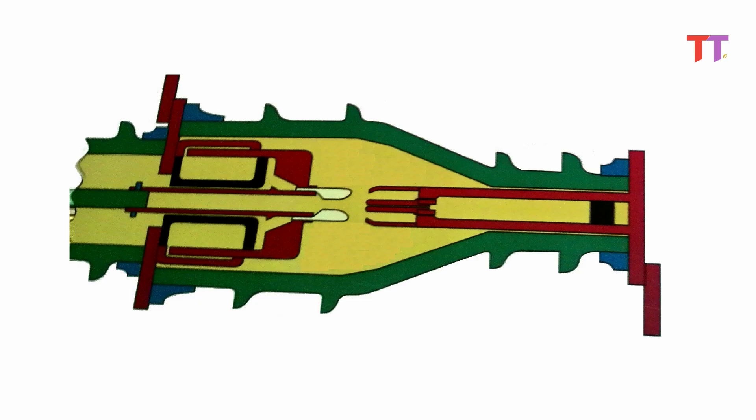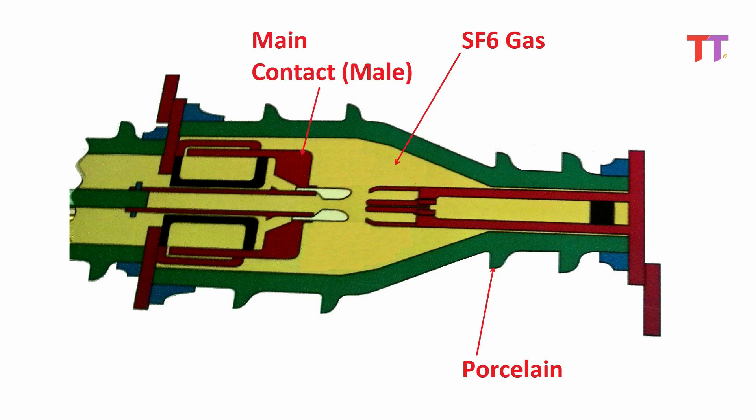Here in the diagram we can see longitudinal section of interrupter. This is airtight chamber filled with SF6 gas inside porcelain housing. We can see two main contacts. This one is male contact which is moving and this other one is female contact which is fixed.